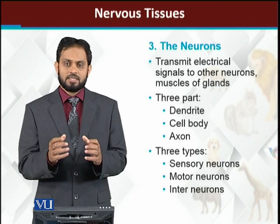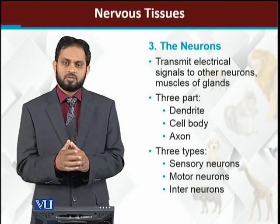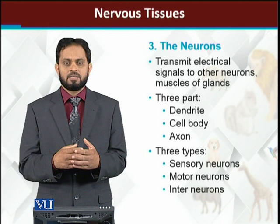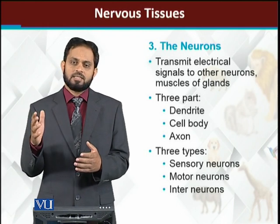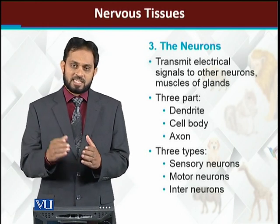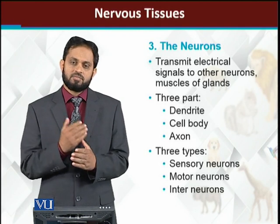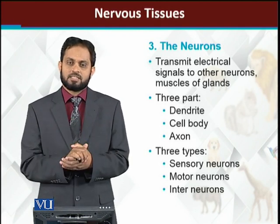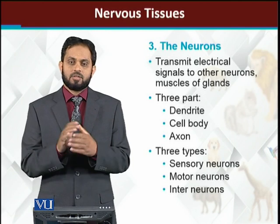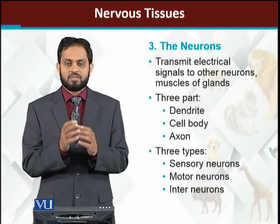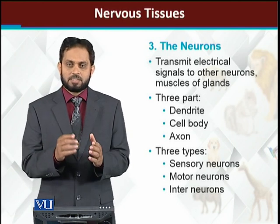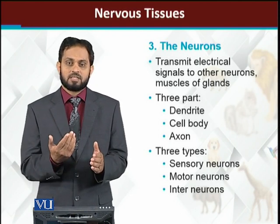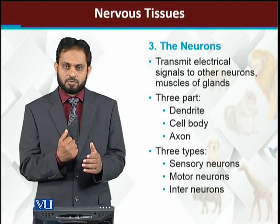In the nervous system, what actually happens is that messages travel, messages are processed, and messages go forward in the form of orders. The message that travels in the nervous system generally travels in the form of electric signals — electric current travels within it. So neurons are very specialized cells for transmitting electric signals, which we also call nerve impulses.